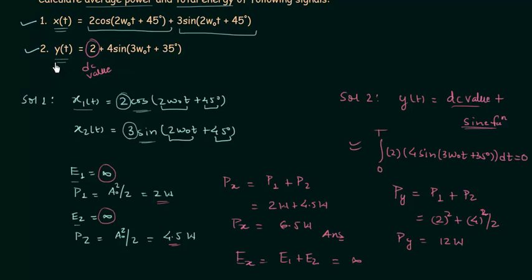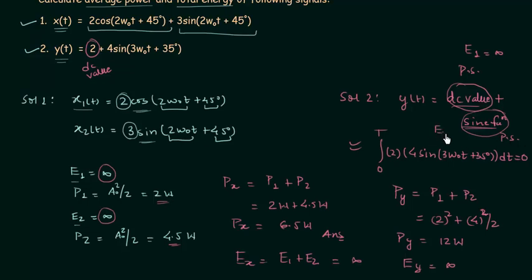Now we will find the total energy of signal y(t). The total energy E(yt) is equal to infinity, because the DC value is a periodic signal so e1 = infinity, and the sine function is also a periodic signal so e2 = infinity. Therefore E(yt) = e1 + e2 = infinity. That's all for this lecture — if you have any doubts, ask in the comment section. See you in the next one.